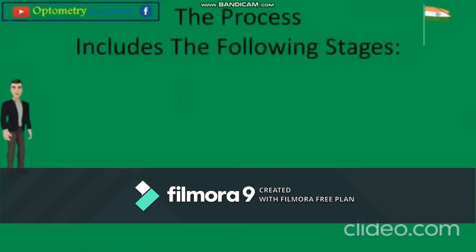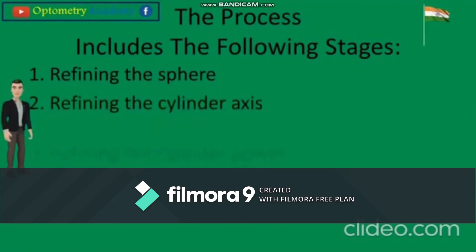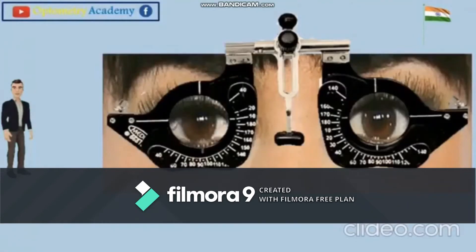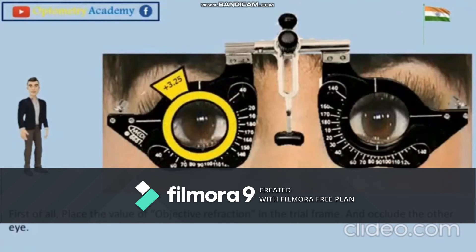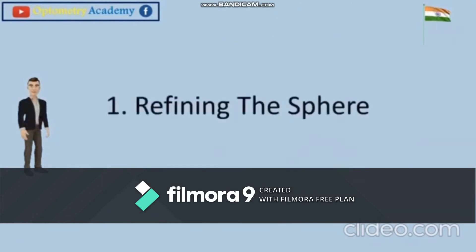The stages of this process are: first, refine the sphere; second, refine the cylinder axis; third, refine the cylindrical power; then perform the duochrome test; and finally perform binocular balance testing. We begin by placing the value of the objective refraction in the trial frame and occluding the other eye — in this case plus 3.00 DS / plus 1.00 DC axis 180.